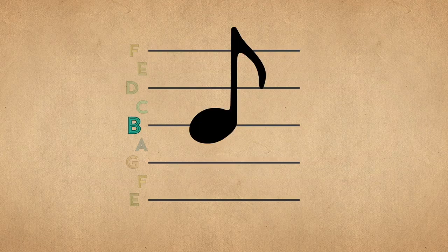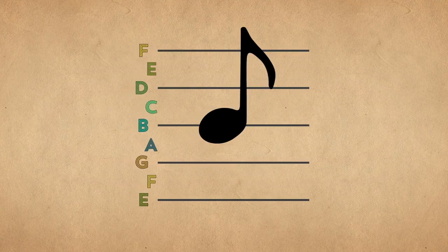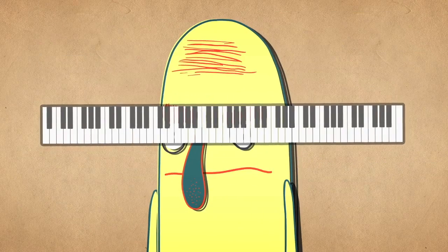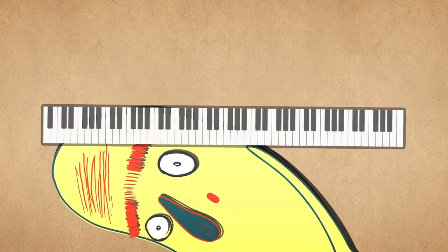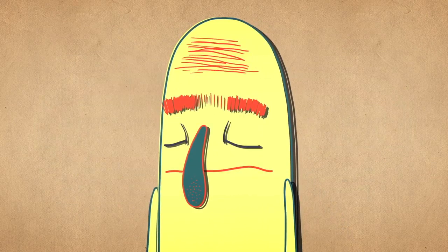But there are obviously many, many more pitches than the nine that these lines and spaces give us. A grand piano, for example, can play 88 separate notes. So how do we condense 88 notes onto a single staff?